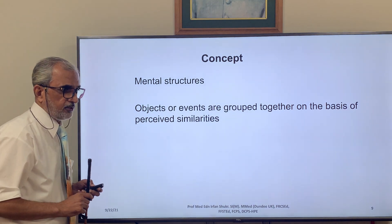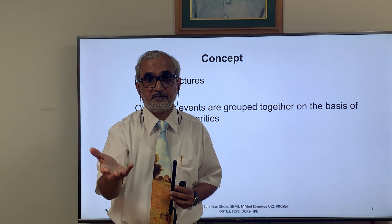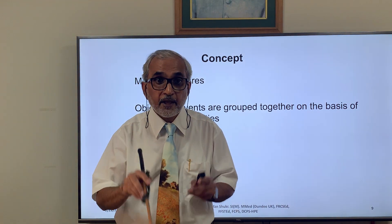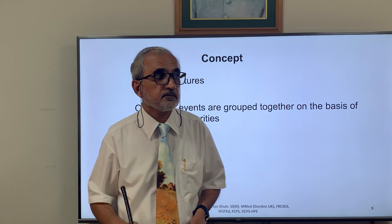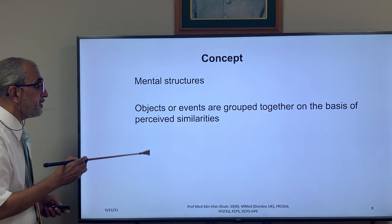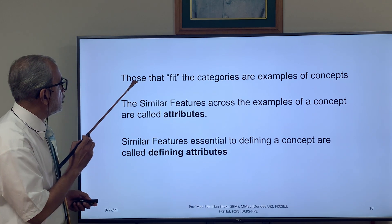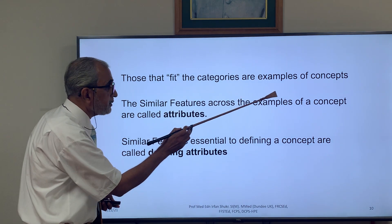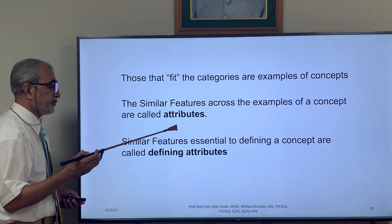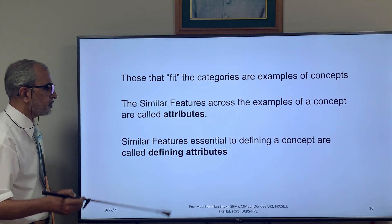A category is something which has shared characteristics — those that are similar — and that something is a concept. Concept is a mental structure, meaning it exists in the mind; one cannot see it or dissect and pinpoint which neurons constitute it. Objects or events are grouped together on the basis of perceived similarities. Those that fit the category are examples of a concept, and the similar features across examples are called attributes. Essential defining features are called defining attributes.